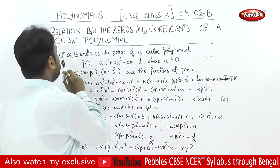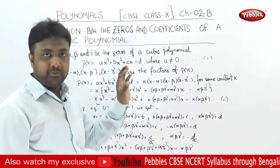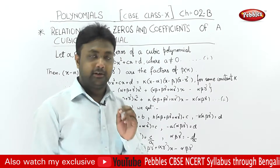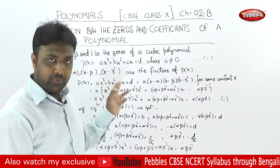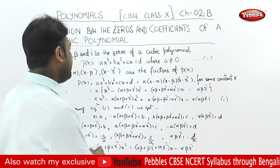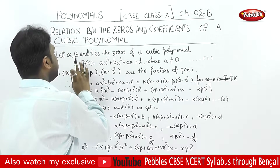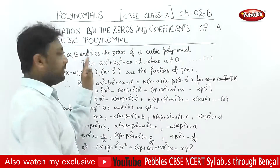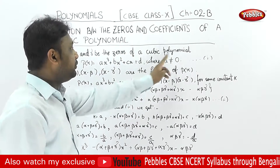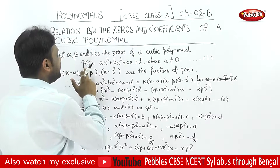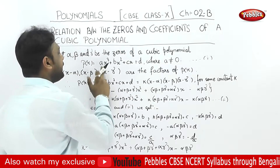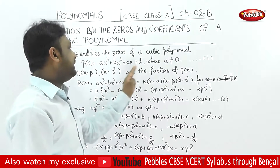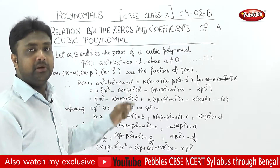The normal expression is P of x equals to ax cube plus bx square plus cx plus d. This is what we call the standard form of a cubic polynomial — a degree 3 polynomial.